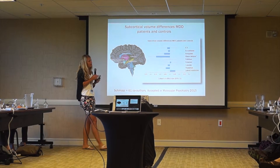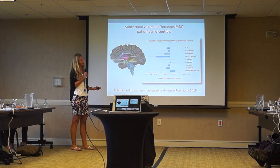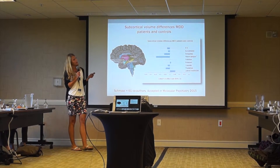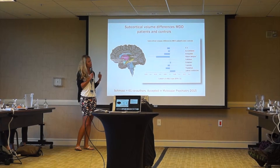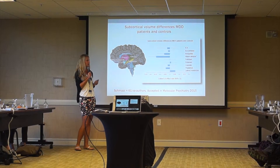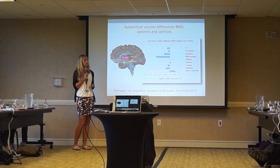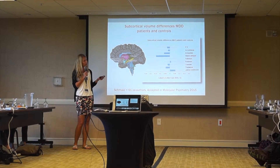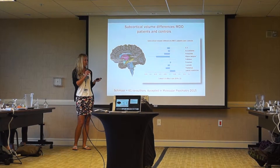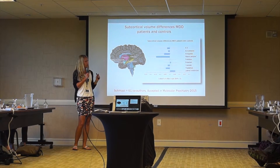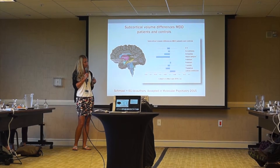We also looked at antidepressant medication but didn't find any effects. We saw a trend for the hippocampus but in a different direction — normally you'd expect patients on antidepressants to show an increase in hippocampal volume, but we actually saw a decrease. I don't think a cross-sectional design is very suitable for examining antidepressant effects, as most sites only had data on whether patients were currently taking antidepressants, not duration of use, which is confounded by severity. When we included recurrence in the model, the antidepressant effect disappeared.